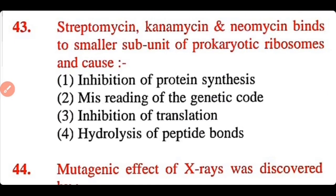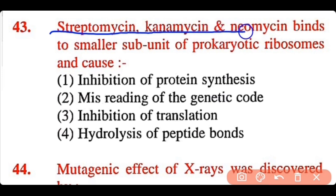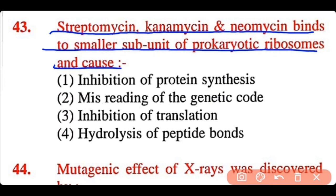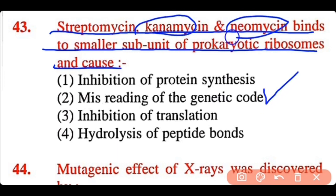Question 43: Streptomycin, kanamycin, and neomycin bind to the smaller subunit of prokaryotic ribosomes and cause: inhibition of protein synthesis, misreading of the genetic code, inhibition of translation, or hydrolysis of peptide bond. The correct answer is option 2. They attach to prokaryotic ribosomes and cause misreading of the genetic code.